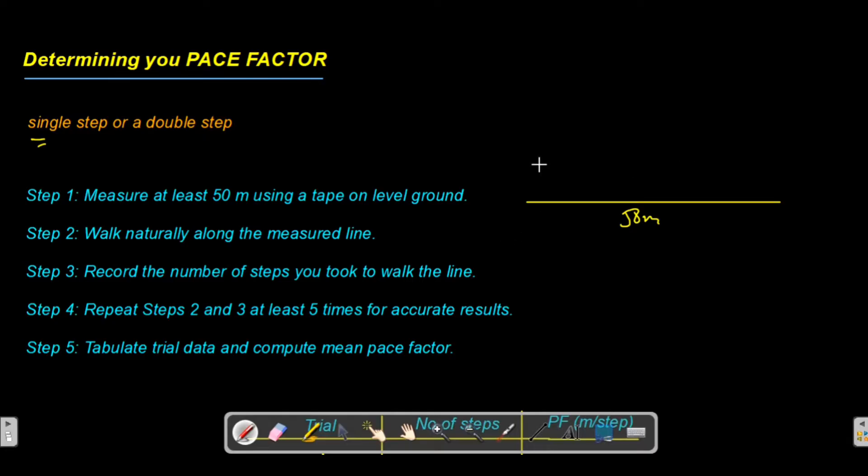Next, you have to walk naturally on the measured line. Walk from this point to the next point and count your steps as you walk along the line. Then record your number of steps that you took to walk the measured line.